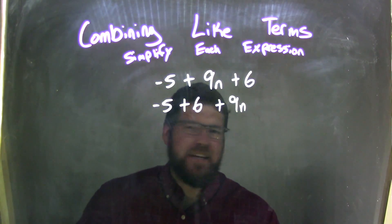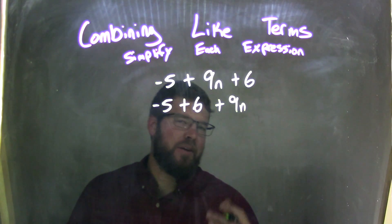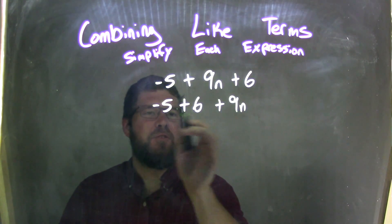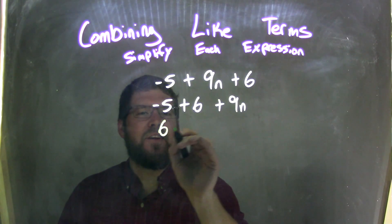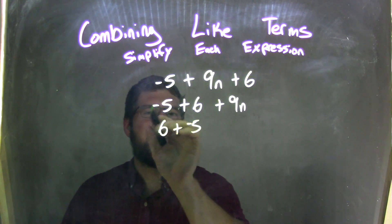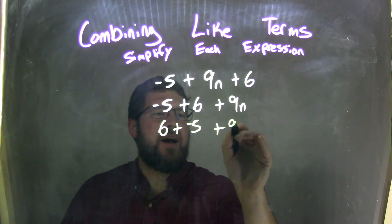Now, let's rearrange to see if you struggle with that, let's rearrange it and see. So, let's use the commutative property again. And this is 6 plus a negative 5, because remember that's a negative 5 out there, plus 9n.